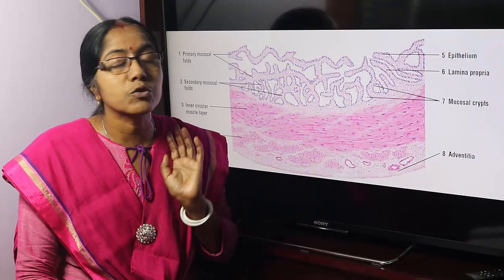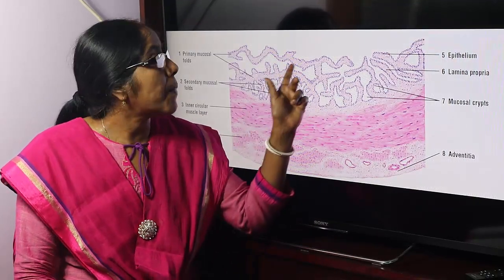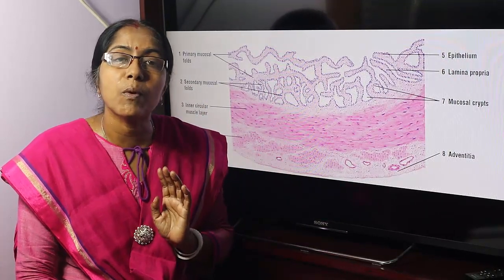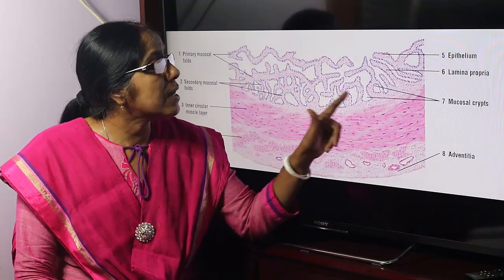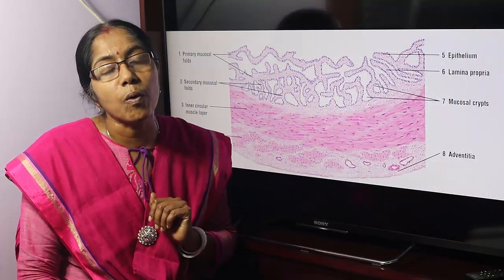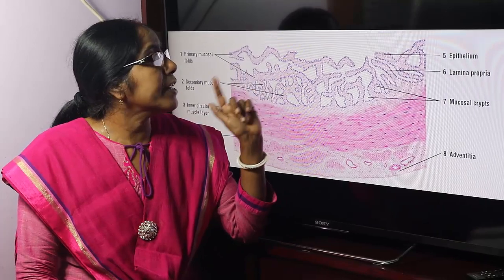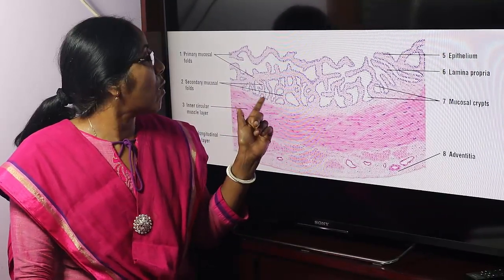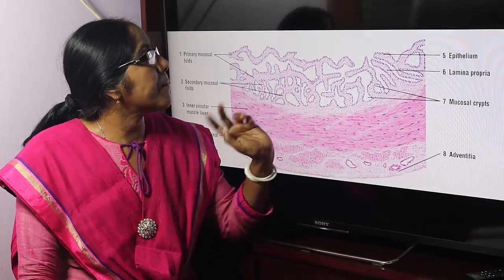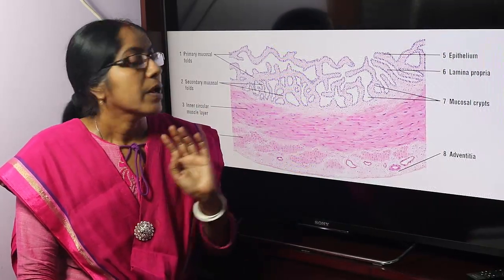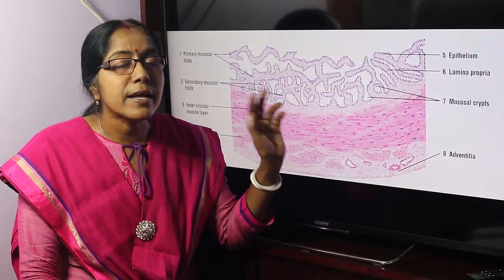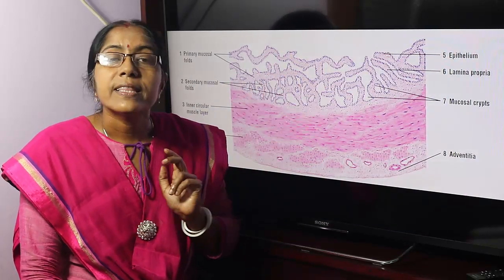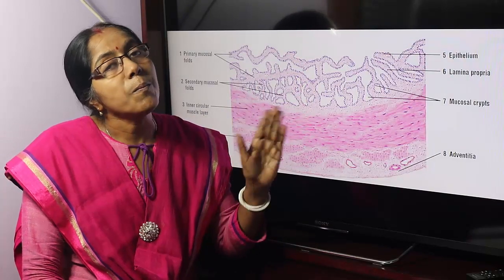The mucosa is thrown into folds — primary mucosal folds. These primary mucosal folds again branch into numerous small secondary folds. These secondary folds anastomose with each other and form cavities, chambers, and crypts, due to this anastomosis of the secondary mucosal folds.